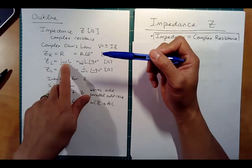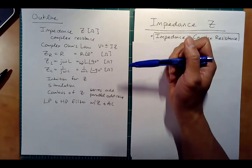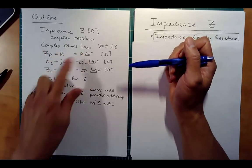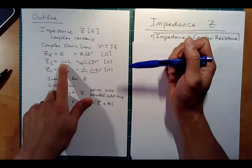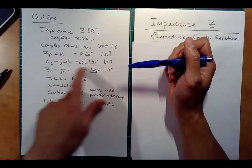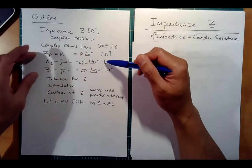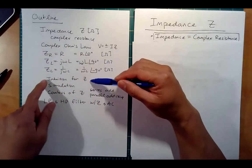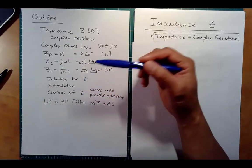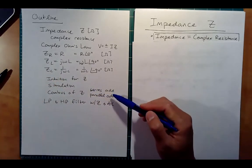Notice here the angular frequency does matter, and the impedance itself is a complex number. You see real numbers, rectangular form with just J and imaginary parts, and polar form. We'll bring up all of these, look at the intuition for Z, and then explore the simulation so you can see what's going on in terms of the current, voltage, and sinusoidal waveforms.